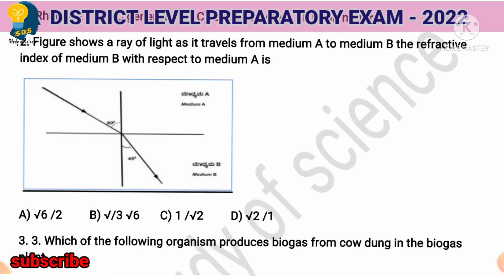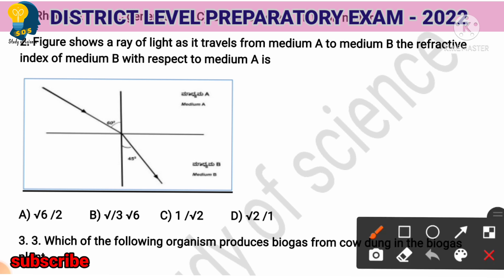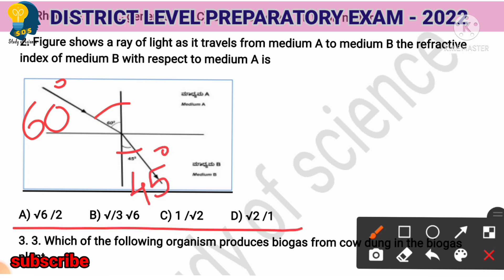Next question: Figure shows a ray of light as it travels from medium A to medium B. The refractive index of medium B with respect to medium A is what? The angle of incidence is 60 degrees and the angle of refraction is 45 degrees. The four options are: root 6 by root 2, root 3 by root 6, 1 by root 2, and root 2 by 1.